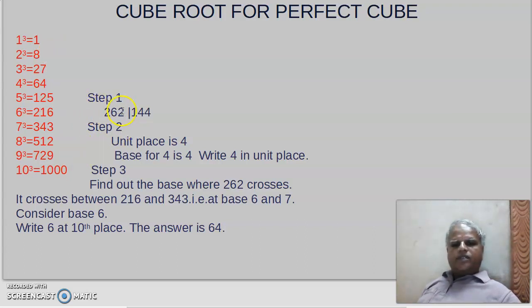What is the first step? Our number is 262,144. First, segregate this. Leave 3 digits: unit place, 10th place, and 100th place. Leave 3 digits.